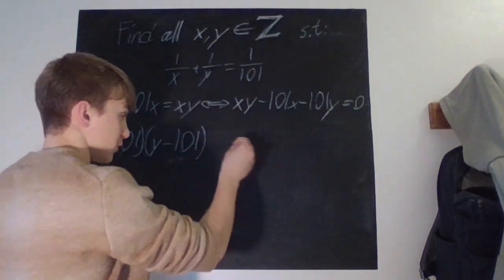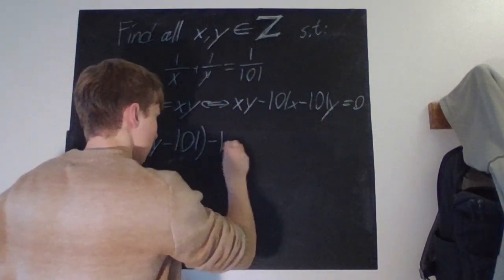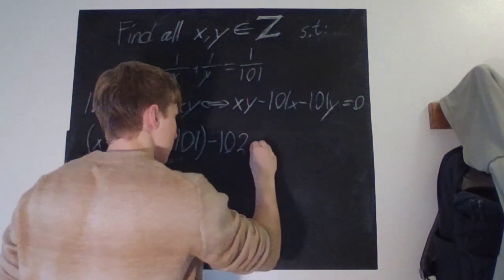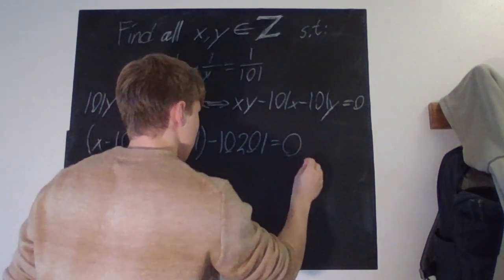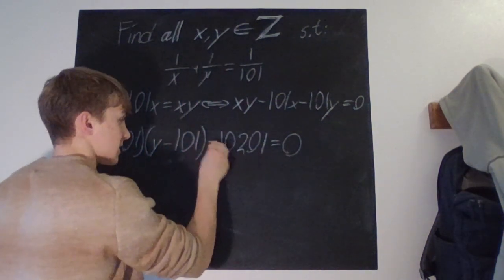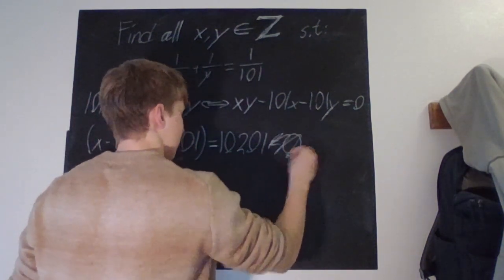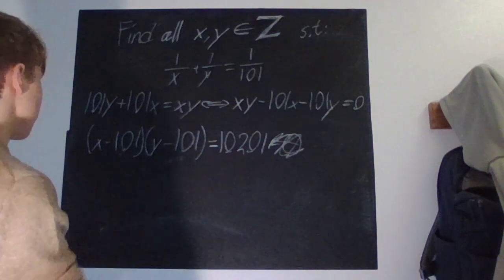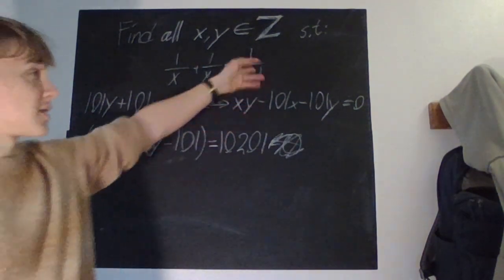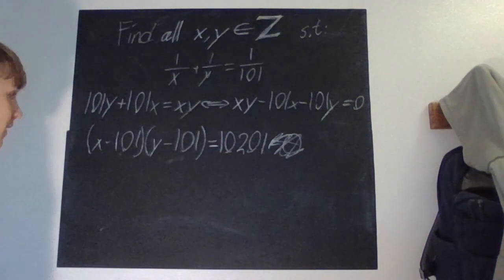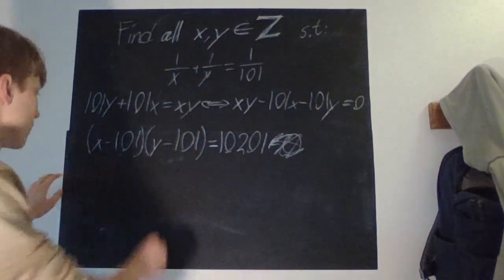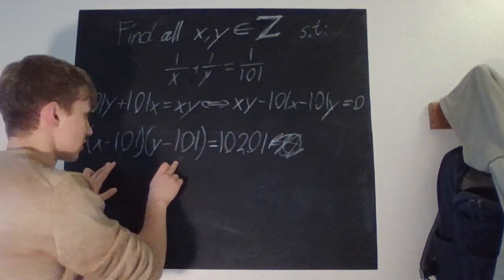So, then we get, we also have to subtract the 10201. And because these are integers, we know x and y are integers, these ones also have to be integers.